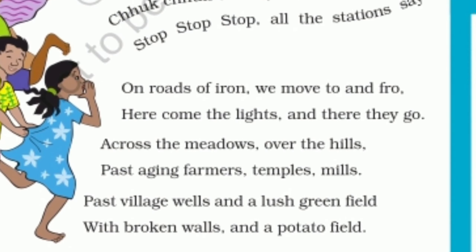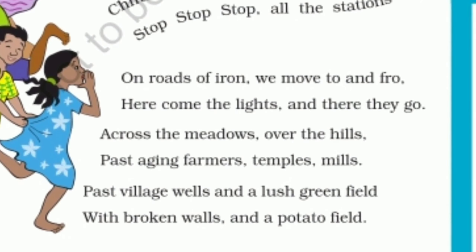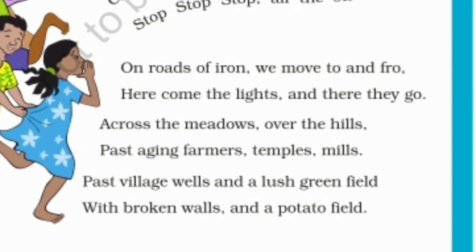Different vehicles use different fuel. Cars, buses, trucks, etc. run on CNG, petrol, or diesel. Trains run on electricity, diesel, or coal and water. Aeroplanes run on petrol and ships run on diesel.